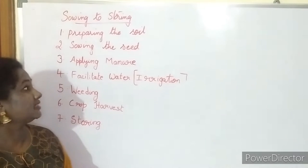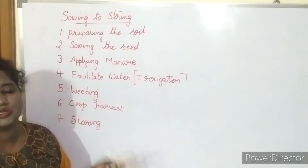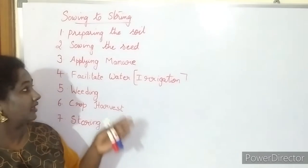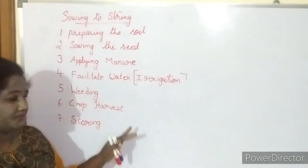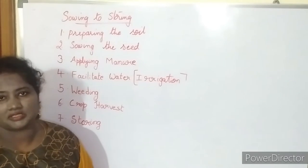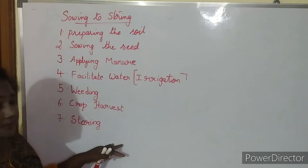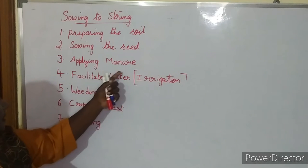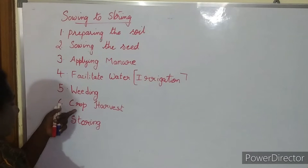In this video we are going to discuss more about the steps of agriculture. Last video we have seen Kharif crops and Rabi crops. Here we are going to see what are the steps in agriculture. Both the Rabi and Kharif crops farmers follow the same steps. There are seven steps: preparing the soil, sowing the seeds, applying manure, facilitating water, weeding, crop harvest, and storing.